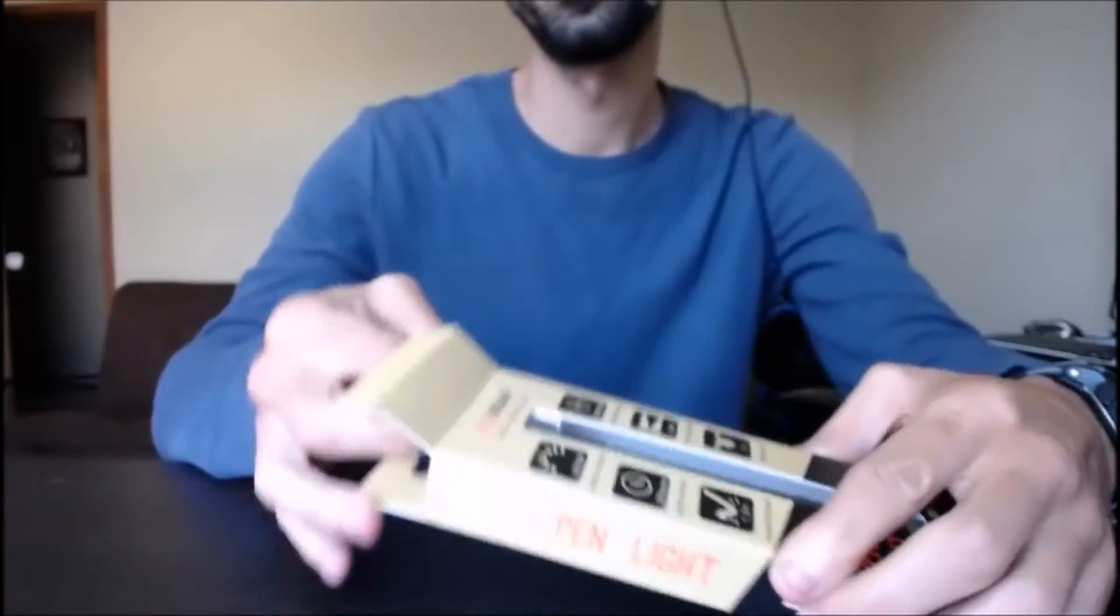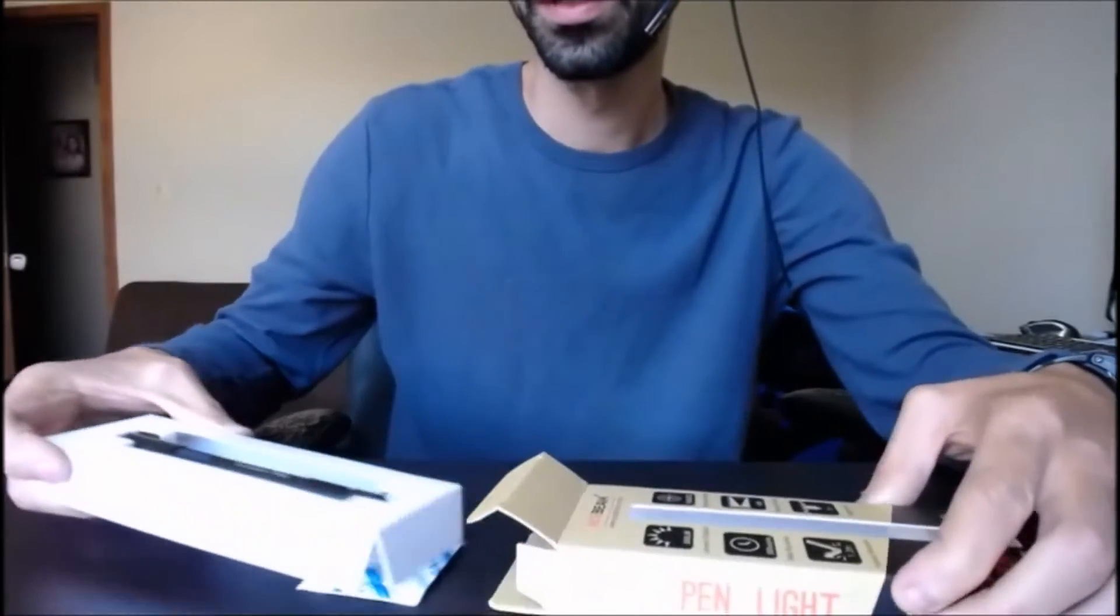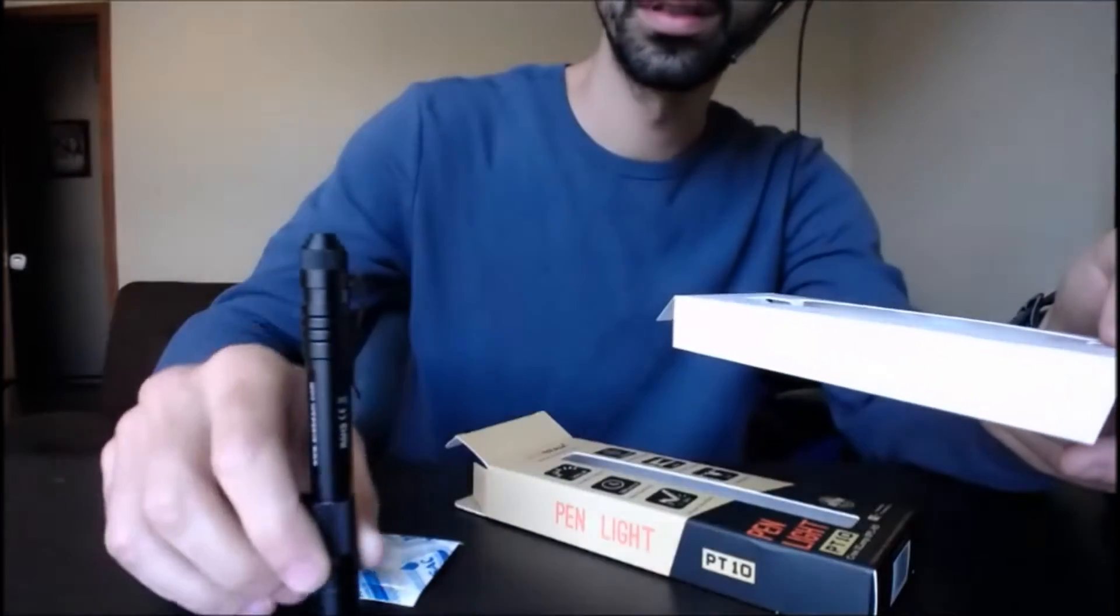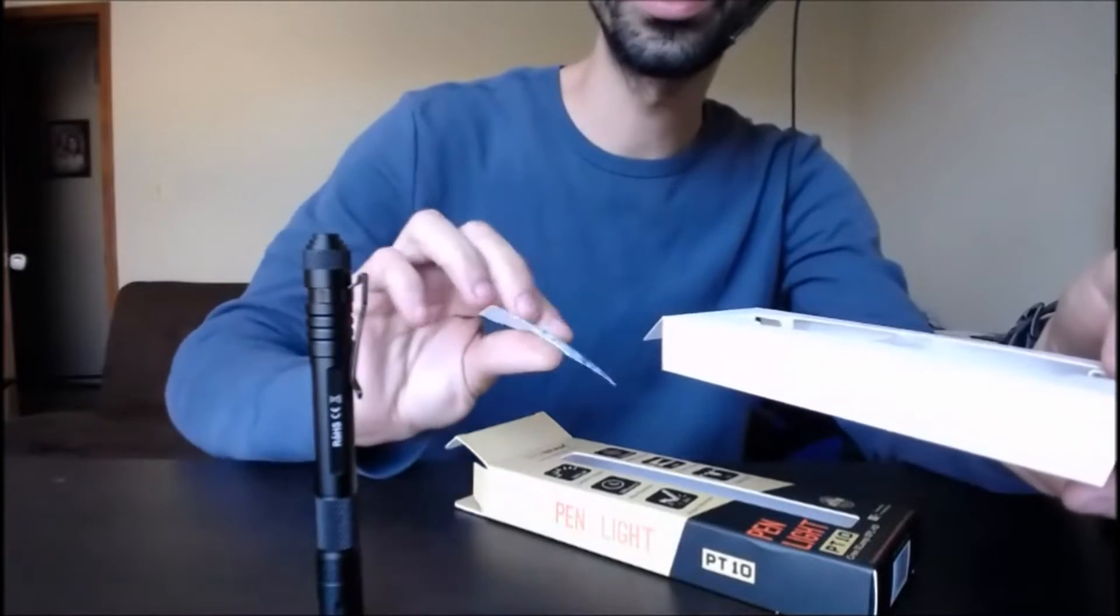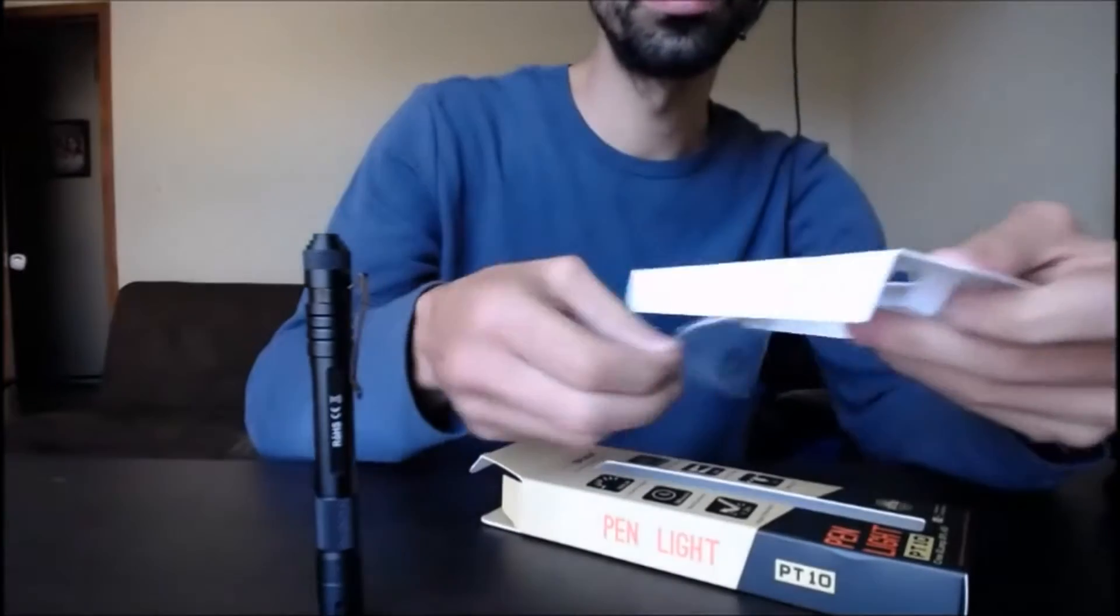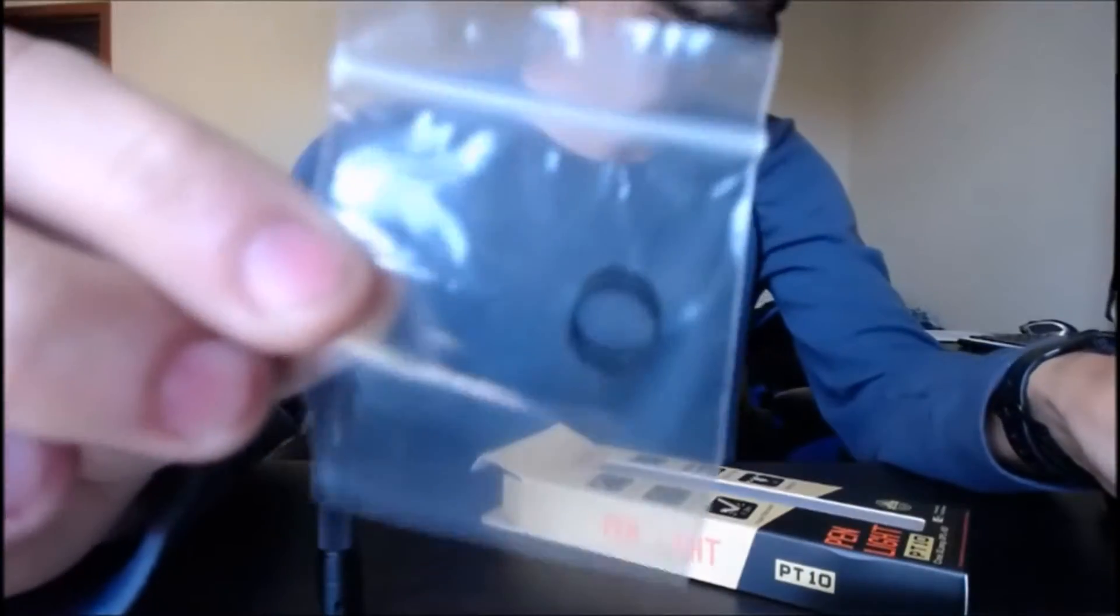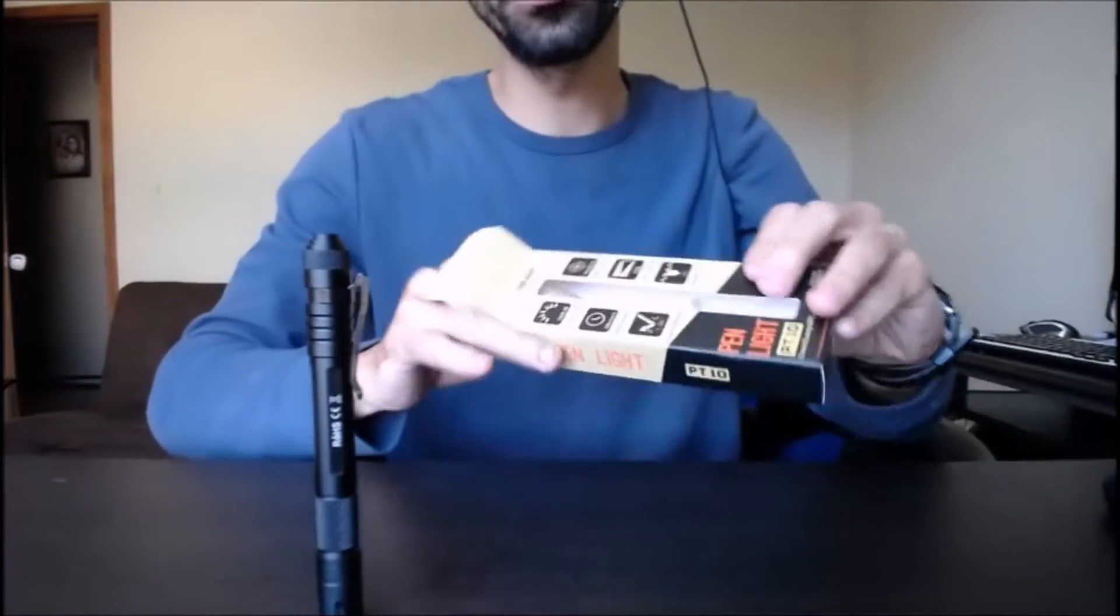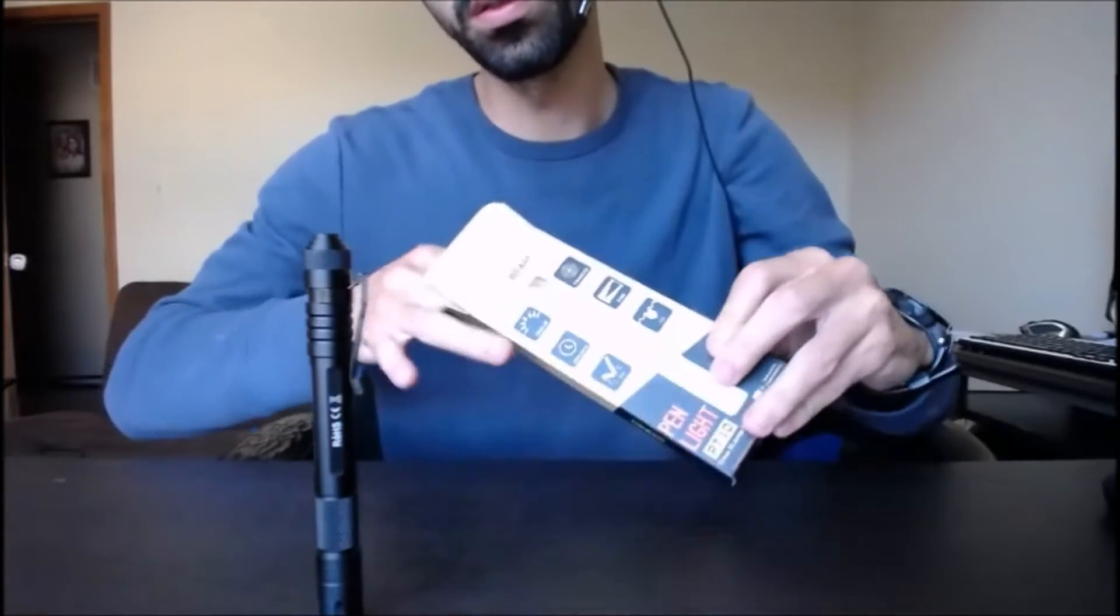So let's open it up and see what we got inside. So we got the pen light, let's take it out. We got a silica gel and two spare O-rings. Let's put it aside a little bit. Oh, and a manual. It also has a manual.